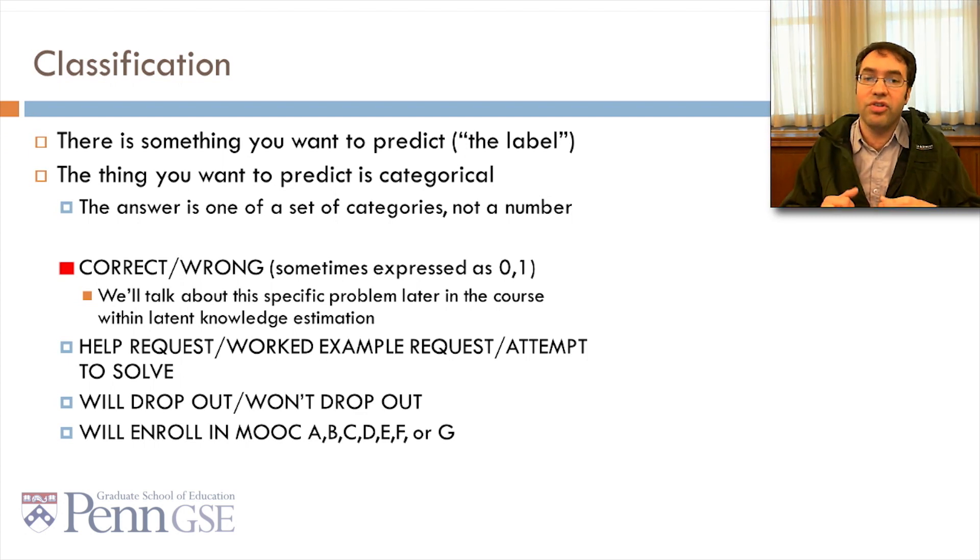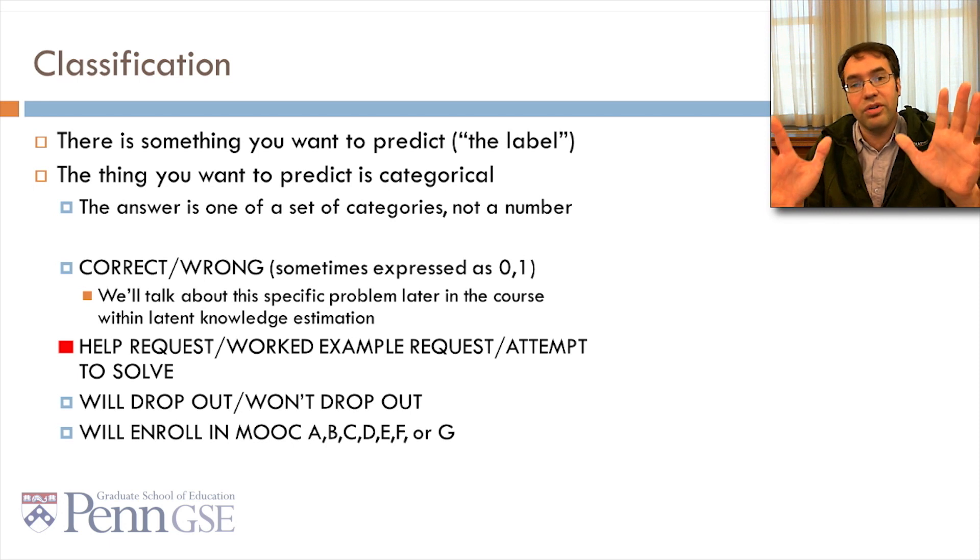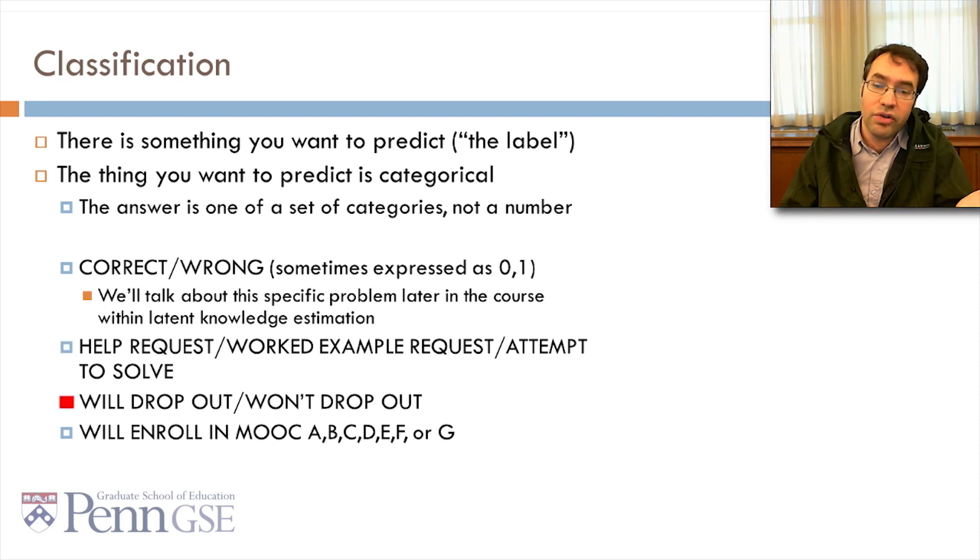For example, it could be correct or wrong, which is actually the special case of latent knowledge estimation. It could be, did the student make a help request, make a work example request, or attempt to solve the problem without help. It could be, will the student drop out or not? Or it could be, will the student enroll in MOOC A, B, C, D, E, F, or G?